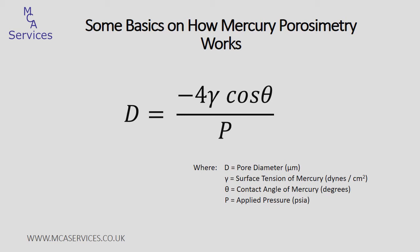The intrusion pressure against volume data is converted to corresponding pore sizes by applying Washburn's equation, shown here in a convenient form, where D is the pore diameter in microns, gamma is the surface tension of mercury, theta is the contact angle of mercury, and P is the applied pressure in PSIA. Knowing the contact angle and the surface tension of mercury means that by precisely controlling and measuring the applied pressure, the corresponding pore sizes can be calculated.